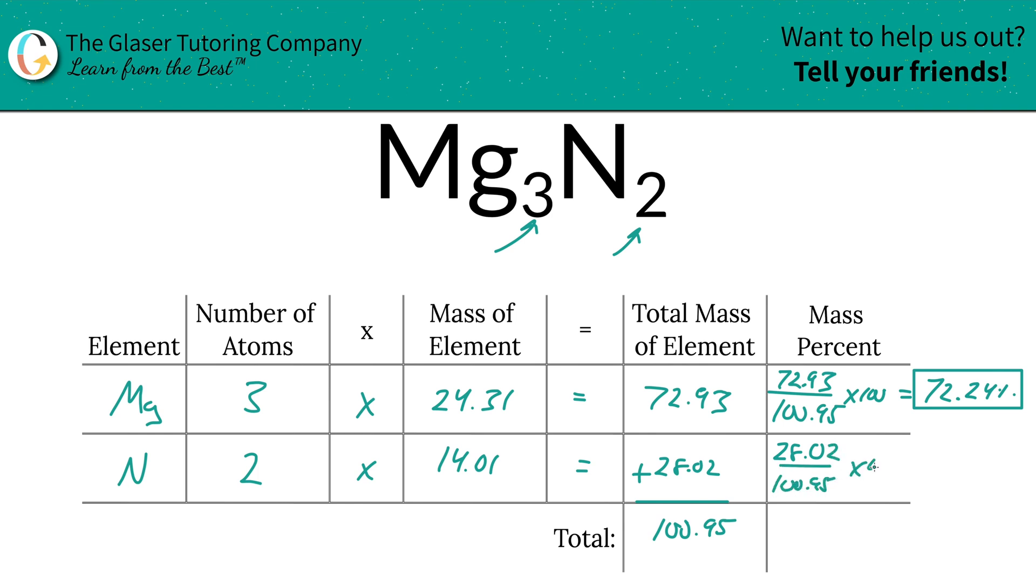And don't worry about the units either here because they will cancel. Whatever unit this is should be the same as this. And the same thing divided by one another works out to be one—they cancel. So this is going to be 27.76%. And that's all there is to it.